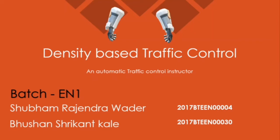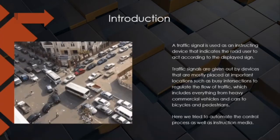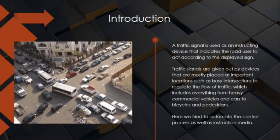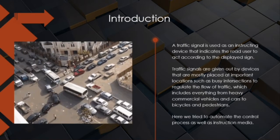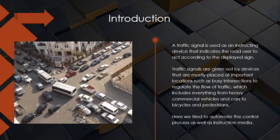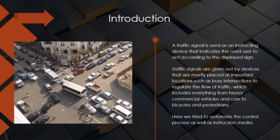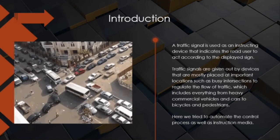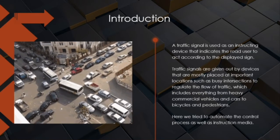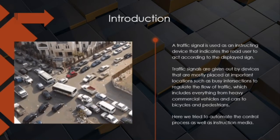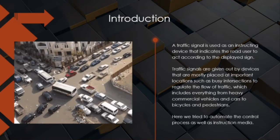Hello everyone. In this video we are going to talk about the project that we have implemented, that is the density based traffic control system with the help of Raspberry Pi microcontroller. As you know, we are living in the 21st century era in which using vehicles has become a necessity, as it reduces the time and effort required by human beings to travel from one point to another. But as the number of vehicles increases, traffic also increases, which causes a lot of issues and consumes a lot of time — and this is where traffic signals come into picture.